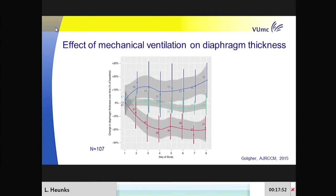This more recent and very important study published by Golliger in the Blue Journal in 2015 measured the thickness of the diaphragm in ventilated ICU patients. What he showed is the change in thickness from ICU admission over the number of days: in about 10% of patients, the thickness of the diaphragm increased. In 45% of patients, there was no change in thickness.